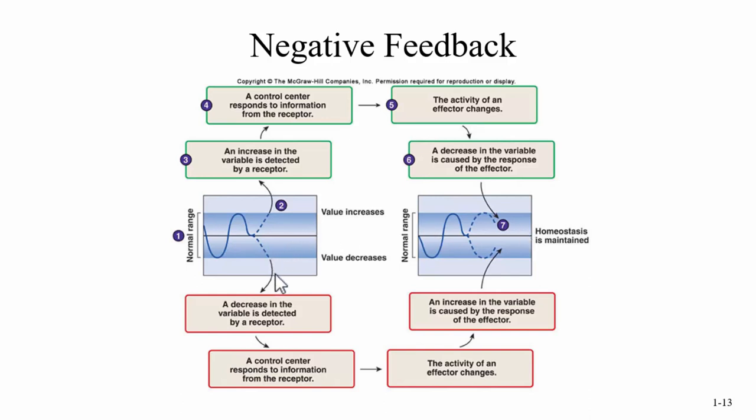On the other side, a decrease in the variable is detected by a receptor, a control center responds to the information, the activity of the effector changes, and an increase in the variable is caused by the response of the effector. Going back to the thermostat — with negative feedback and positive feedback, we have to have a receptor. The receptor in your thermostat is the thermometer — that's what monitors the external environment.